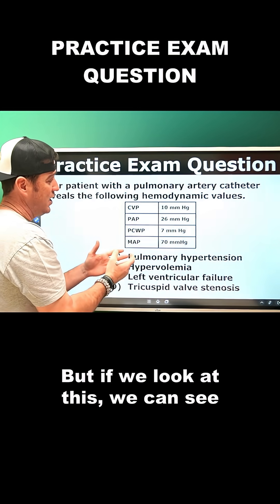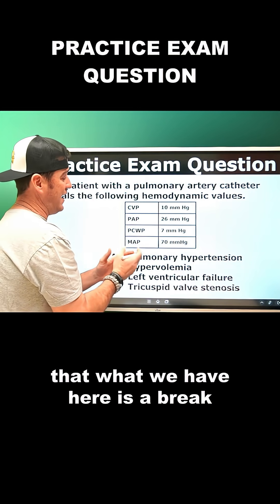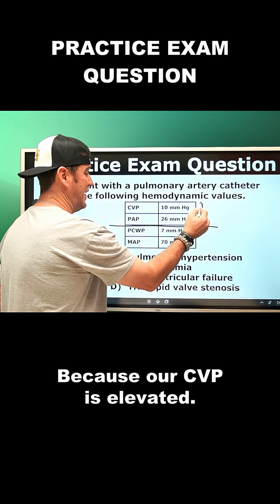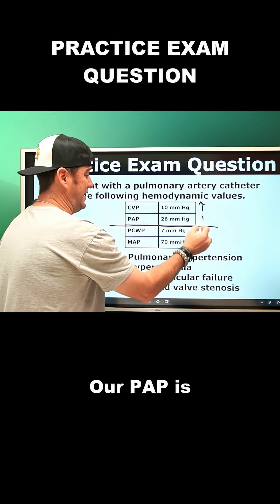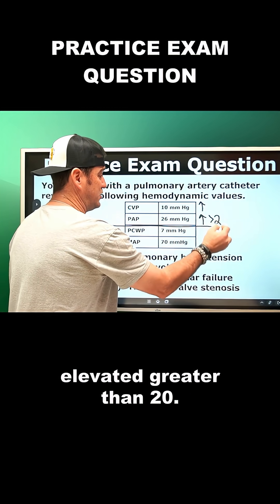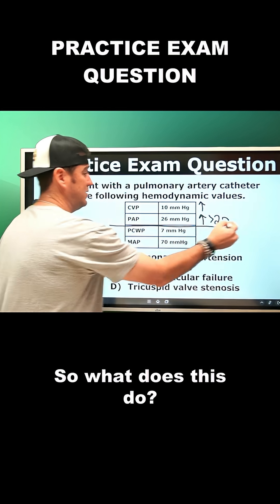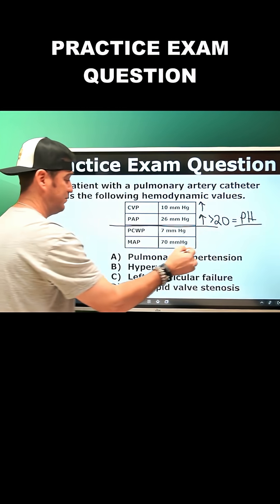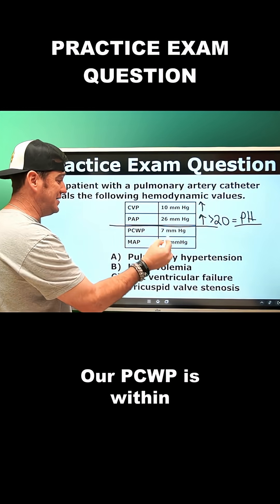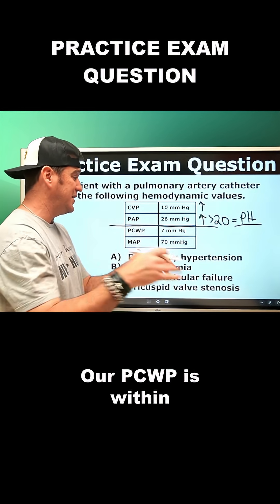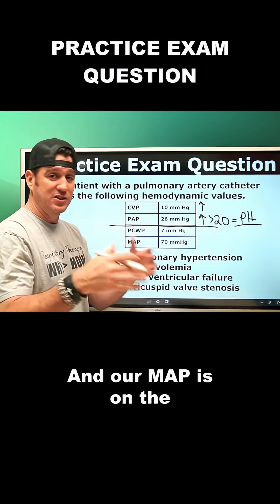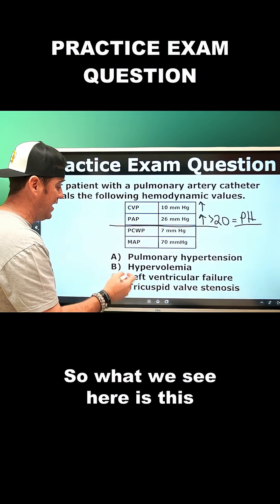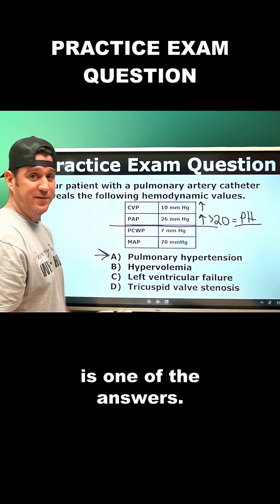If we look at this, we can see that there is a break happening here because our CVP is elevated. Our PAP is elevated, greater than 20. Our PCWP is within its normal range and our MAP is on the low side of normal as well. So what we see here is pulmonary hypertension.